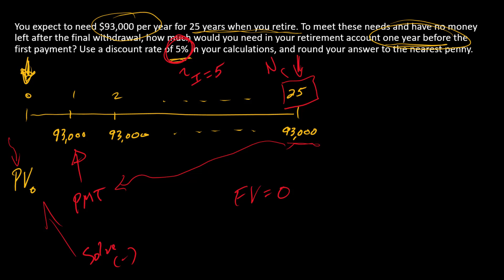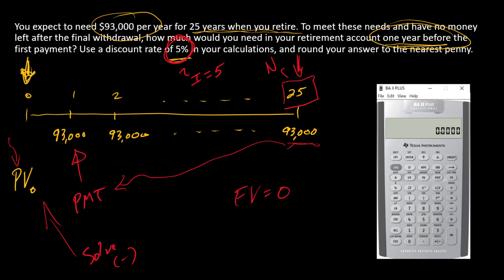Let's now enter these one at a time and find the answer. $93,000 goes into PMT, 0 goes into FV, 5 goes into I, and 25 goes into N.